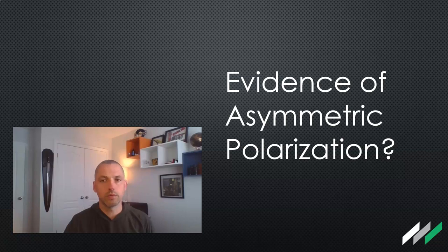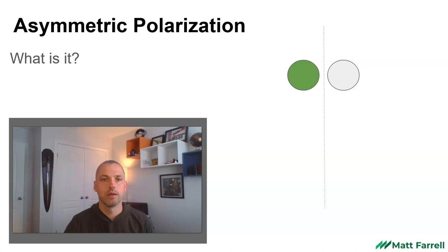In this video we're going to look for evidence of asymmetric polarization. What exactly is asymmetric polarization? Well, let's say we've got our two dots that represent groups of people — in our case parties or voters — a green dot and a gray dot.